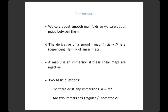Since these are differentiable manifolds, I can take the derivative of a smooth map. The derivative is a family of linear maps — the matrix of partial derivatives varying as you move over the manifold — or a morphism from the tangent bundle of M to the pullback of the tangent bundle of N. A linear map can be asked: is it injective? Once you have differentiability, there's a distinguished class of morphisms worthy of study: immersions.